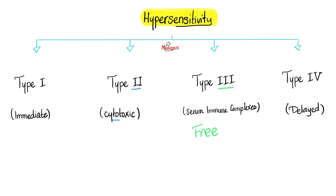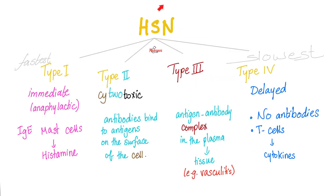What do we mean by free? The antibodies are floating in your blood — not bound to cells, not cytotoxic like type 2. You can describe type 3 in three words: serum immune complexes.